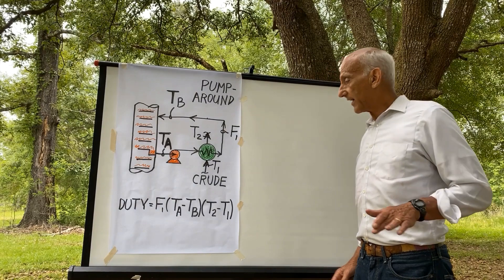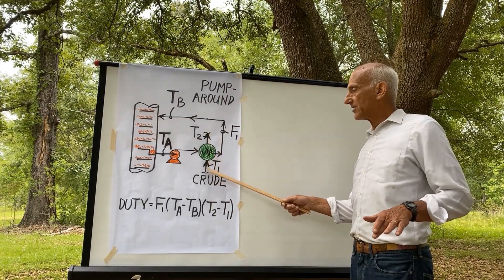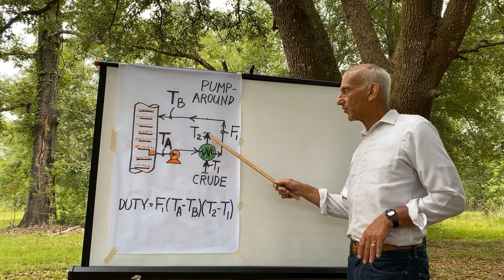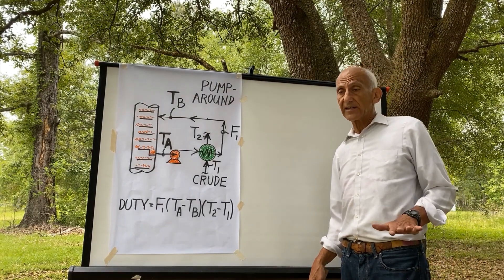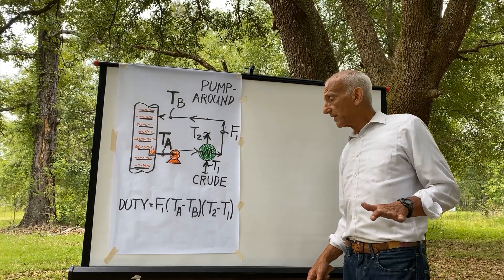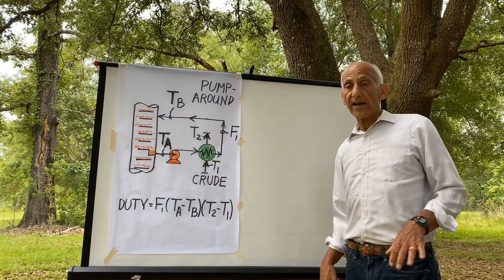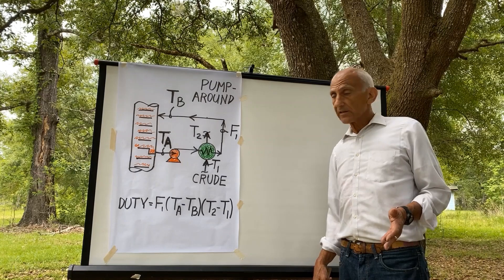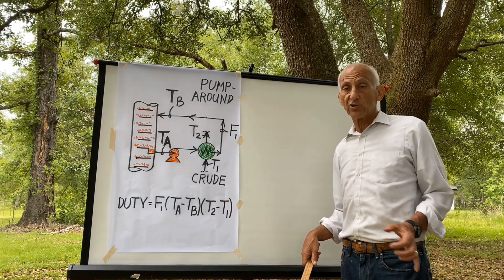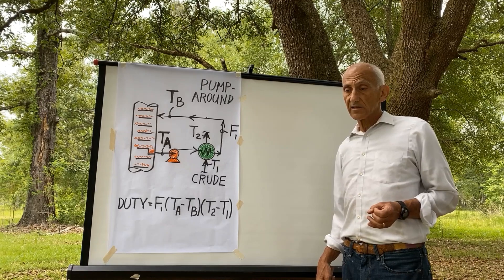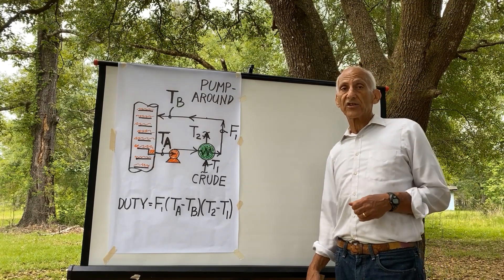So what you have to do is look at the temperature change on the crude side. If this temperature change on the crude side goes up at a constant crude rate, at a constant flow on the tube side, as you increase the pump around circulation rate — if the delta T between T2 and T1 goes up — then you are extracting more heat from the pump around, which is good. But at a constant crude rate, if the temperature difference between T2 and T1 gets smaller, then the pump around heat extraction is diminishing even though the pump around circulation rate is going up.